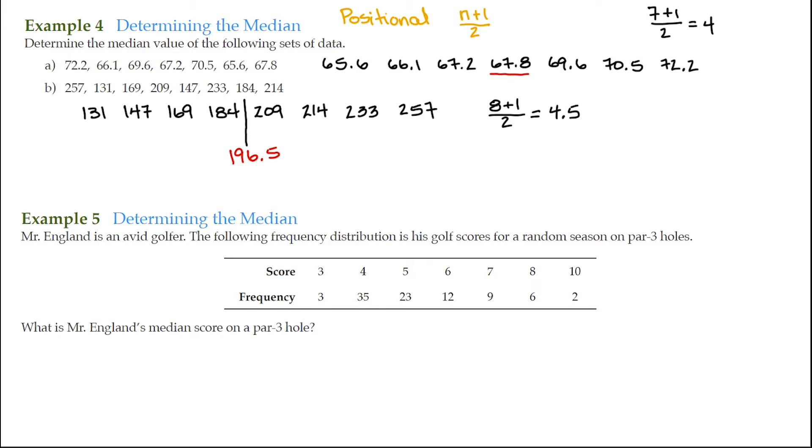So if you recall from this, this was an earlier problem except we were finding a mean. If you recall, we have 3, 35, 23, 12, 9, 6, and 2. There were 90 scores. We just tally up his frequency. It comes out to be 90. So the position that we're looking for is the 90 plus 1 divided by 2. That's 91 divided by 2. That's 45 and a half.